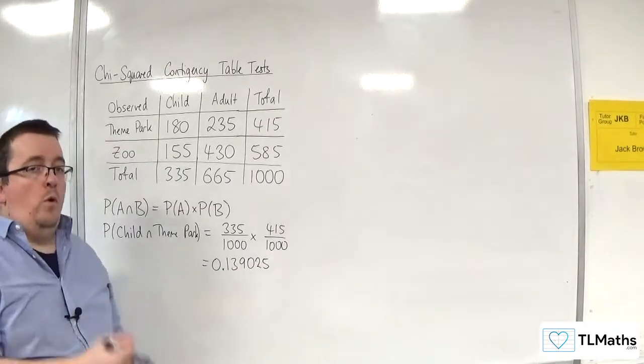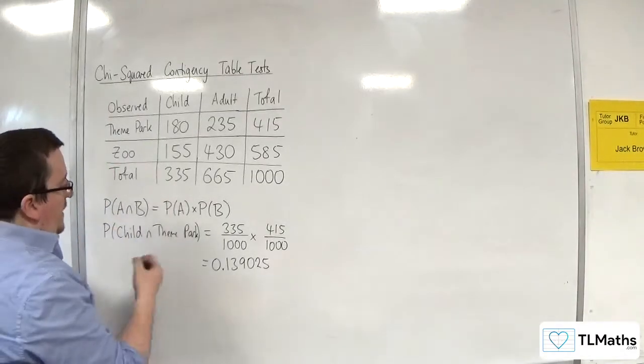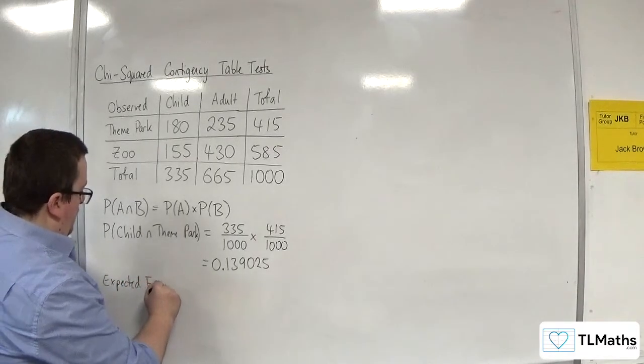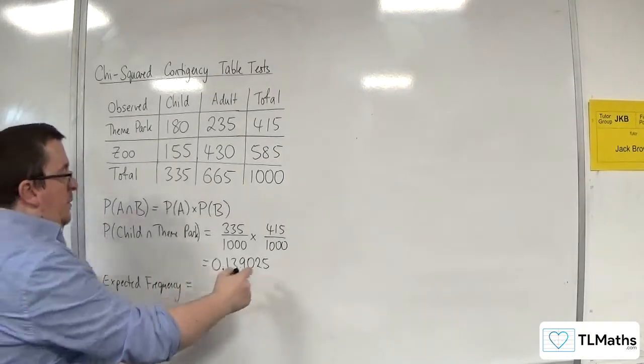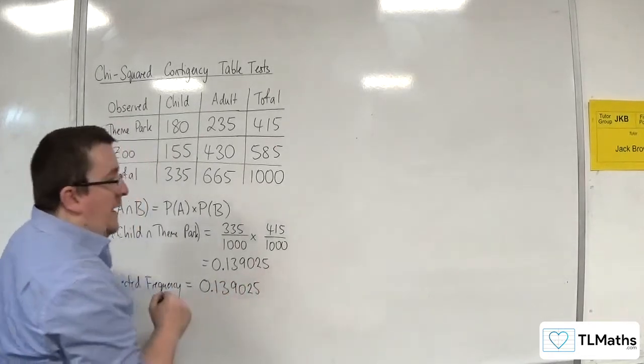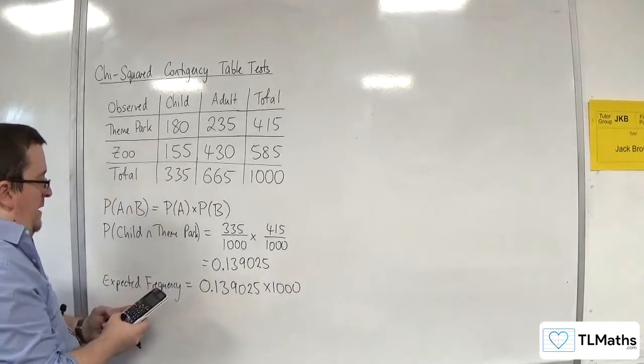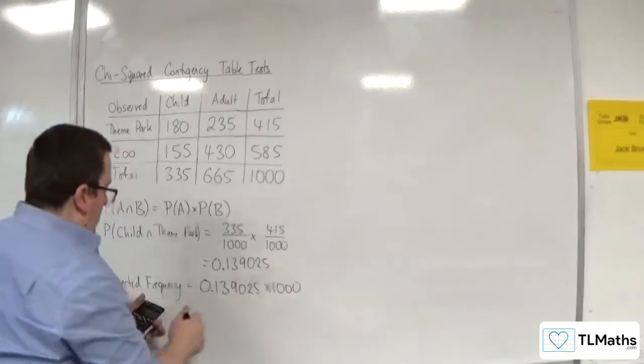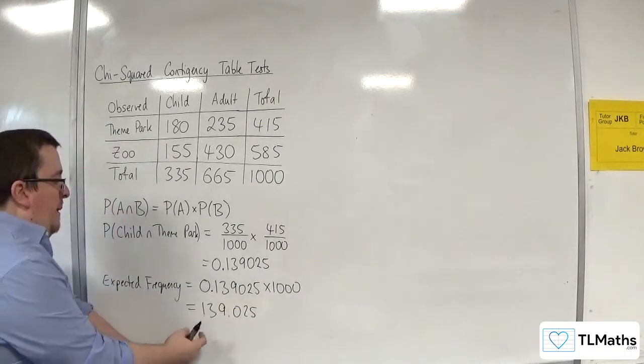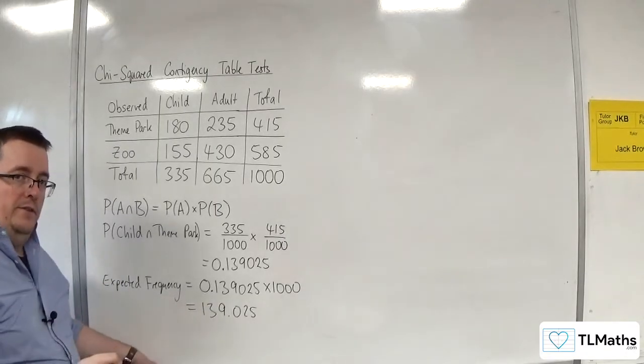Now what we want is an expected frequency for that. So if I want the expected frequency, then I need to multiply that by how many tickets we have sold, which is 1000. So times that by 1000, and we get our 139.025. So this is my expected frequency. That's how many I would expect if they were independent.